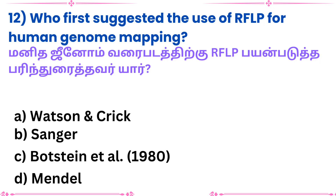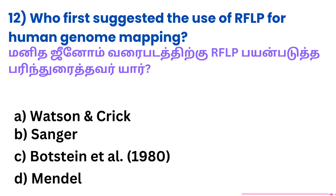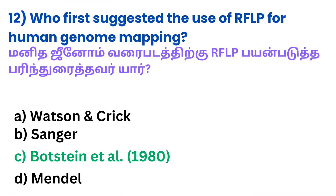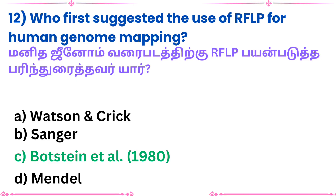Question 12: Who first suggested the use of RFLP for human genome mapping? Answer: Botstein et al.